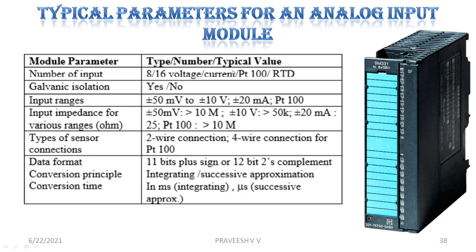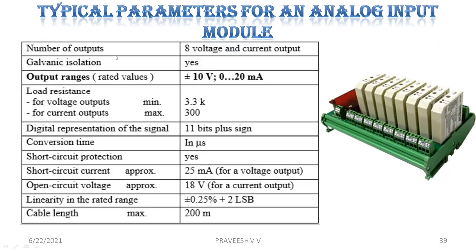Here are typical parameters for input and output modules — analog input module and analog output module parameters. These include: number of inputs/outputs, galvanic isolation, input range voltage, input impedance, sensor connections, data format, output range, load resistance, digital representation, conversion time, short-circuit protection, short-circuit current, open-circuit voltage, linearity, and maximum cable length. These are the output specifications normally provided per module.